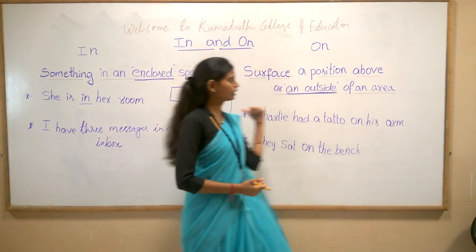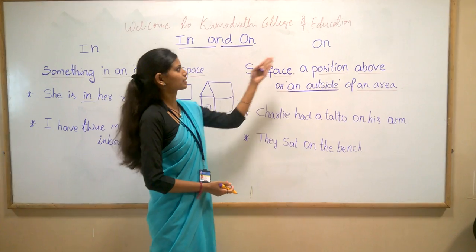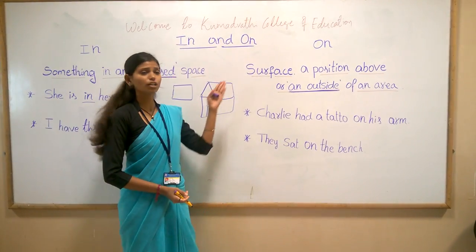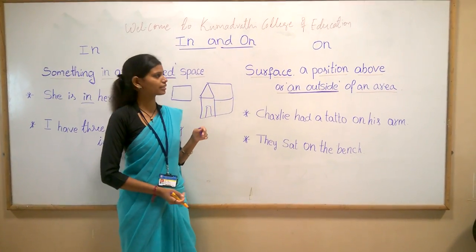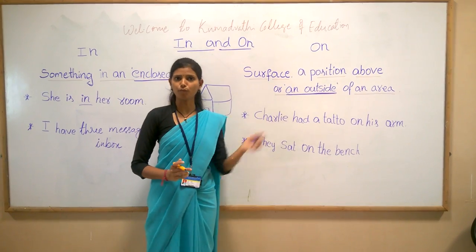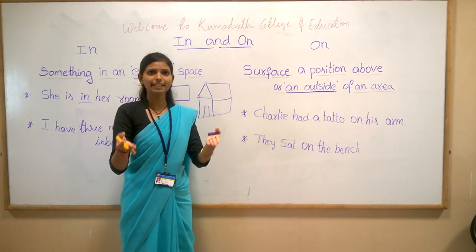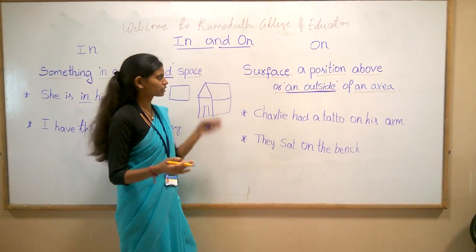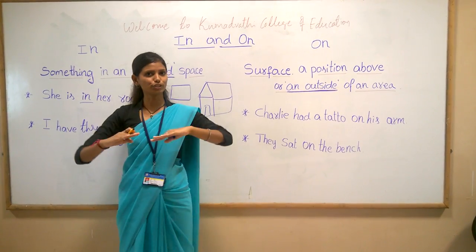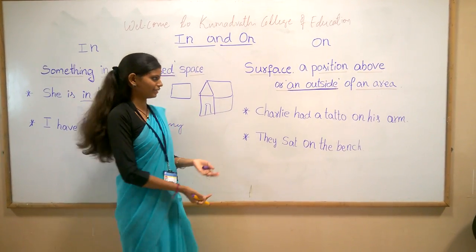On the contrary, we have another preposition — 'on'. The meaning of 'on' is surface: a position above or outside of an area.